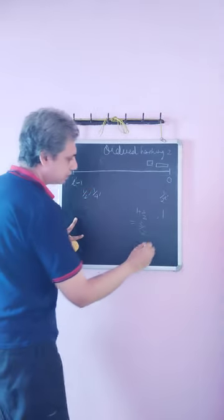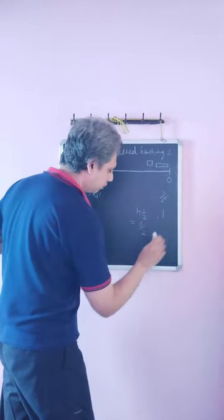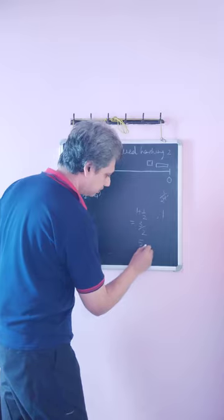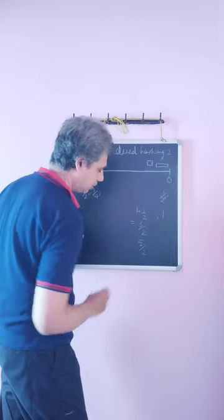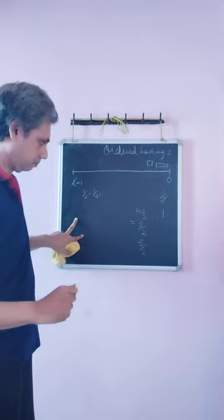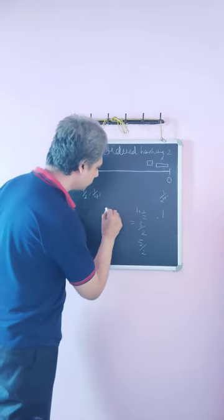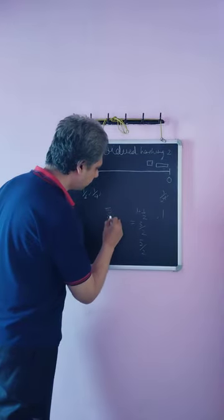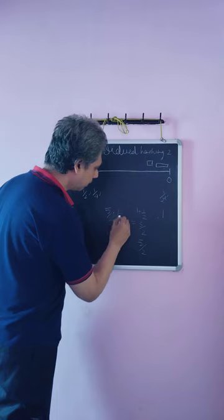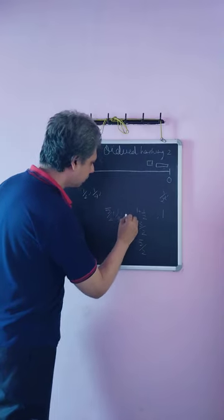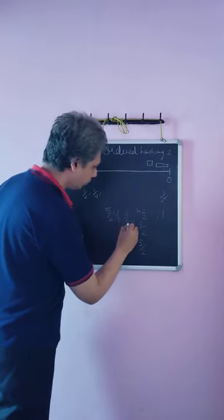Now, 3 by 2 plus 1 will give you 5 by 2. So, to 5 by 2, the next weight will be 5 by 2 plus 1 by 4 equal to 11 by 4.